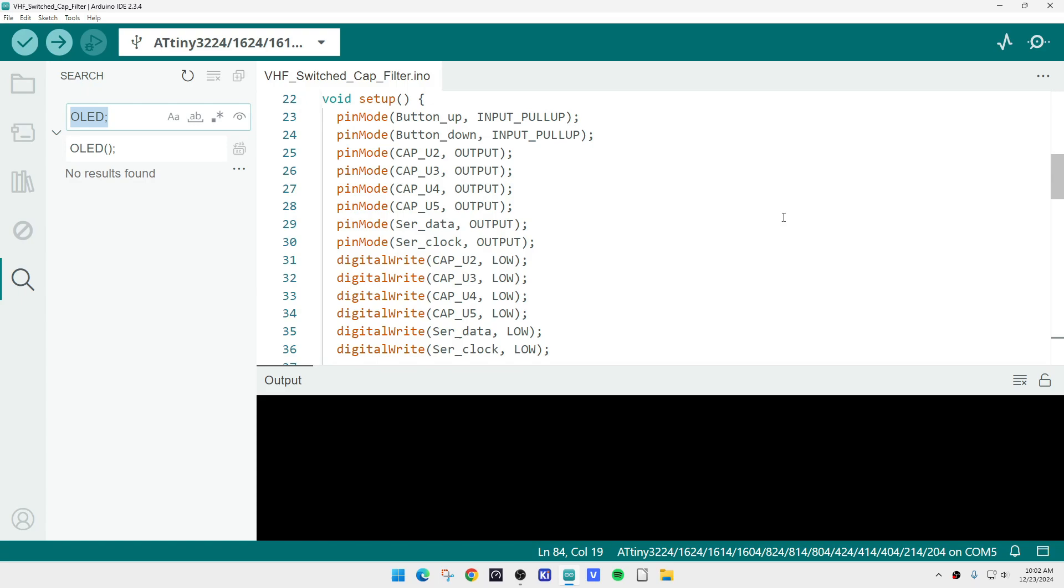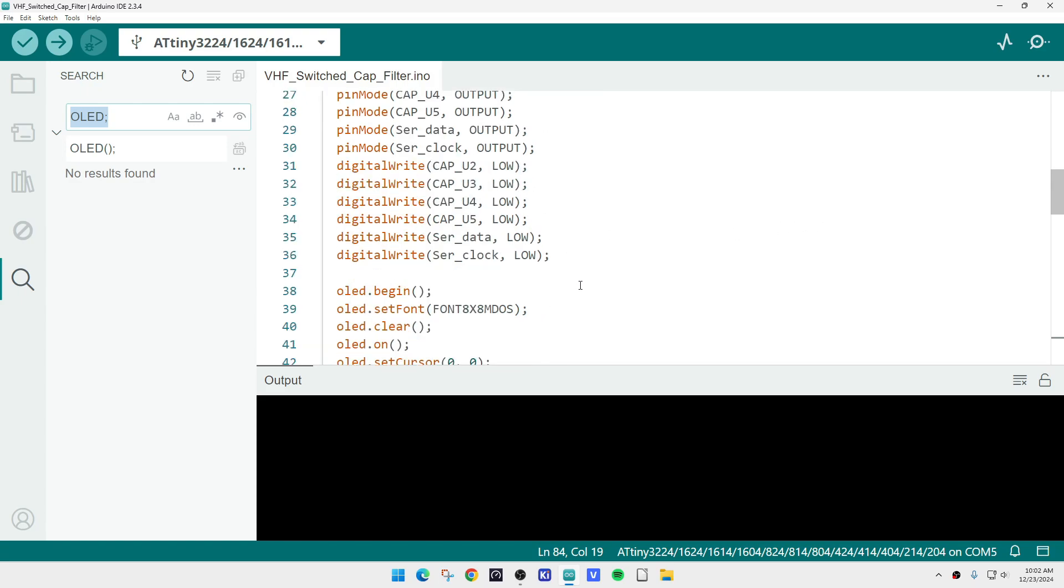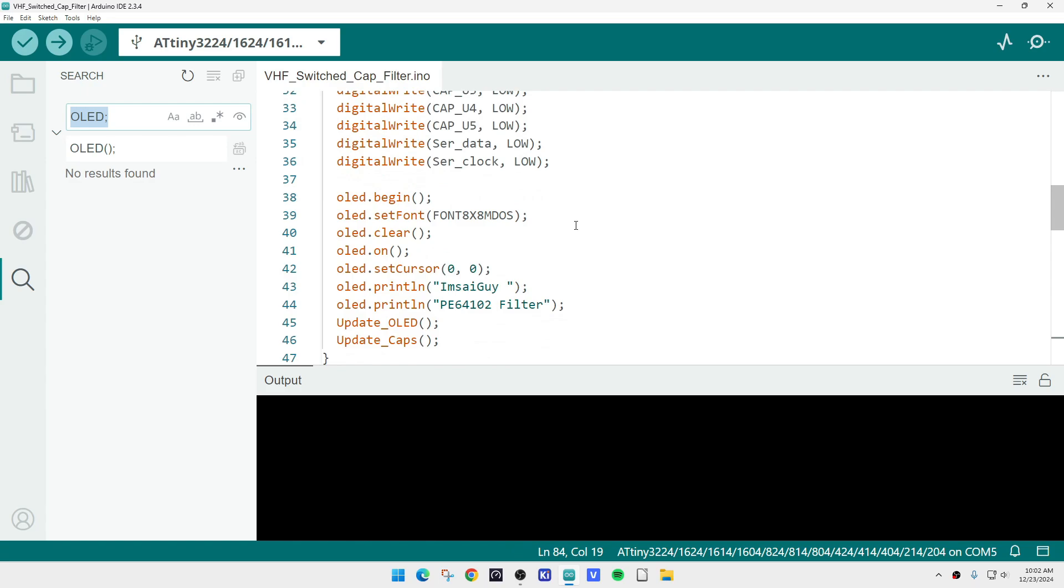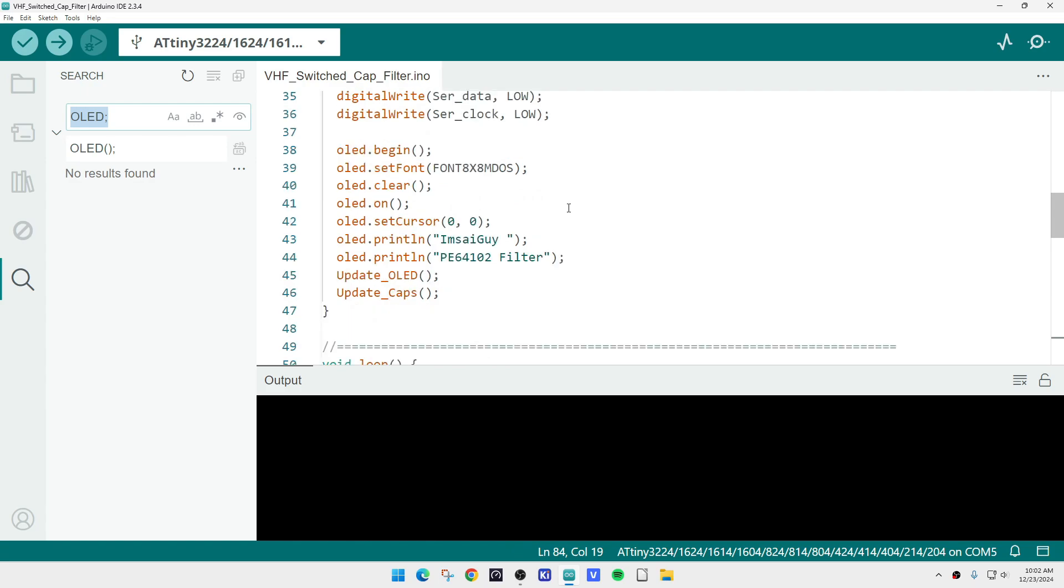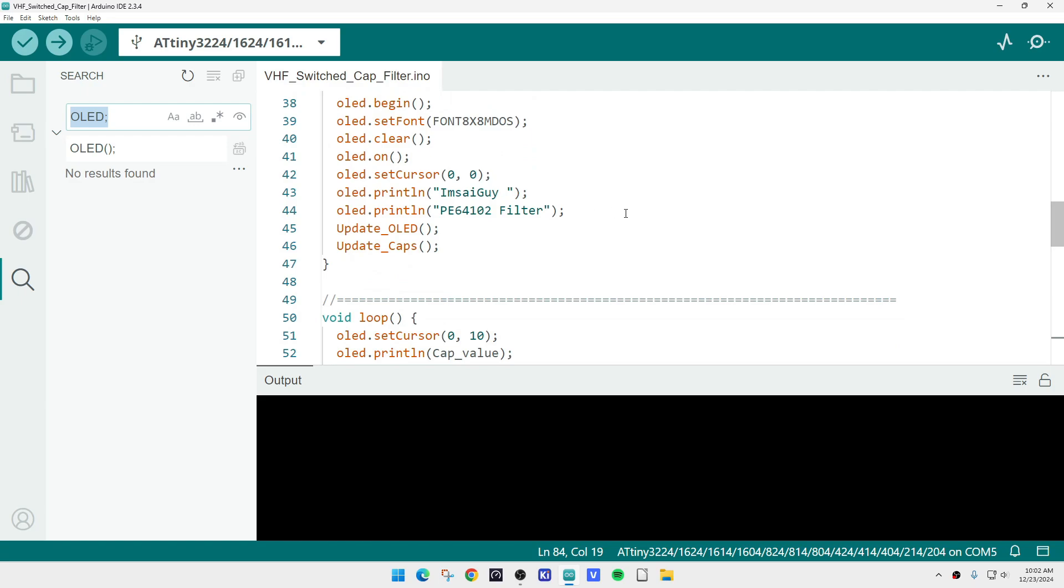The buttons need a pull-up on them, and when you push the button it goes low. We'll set the outputs, set initial values for everything, set up the OLED display, and put a little message on it.